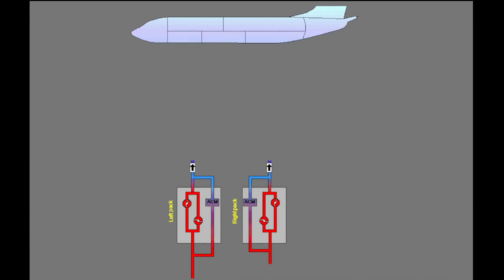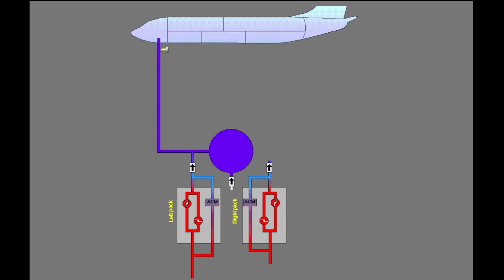Downstream of the pack, the air conditioning system supplies the cool air to the flight deck and the passenger cabin. The air from the left pack first goes to the flight deck and the rest goes to the mix manifold. The air from the right pack goes to the mix manifold.